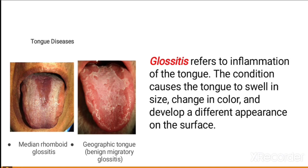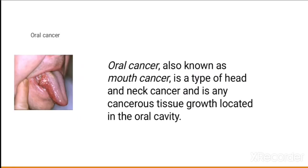In applied anatomy, first is glossitis, which means inflammation of the tongue involving change in size and colour on the surface of the tongue. Then there is oral cancer, also known as mouth cancer. It is a type of head and neck cancer involving any cancerous growth in the oral cavity.